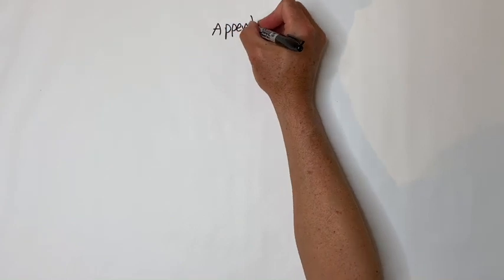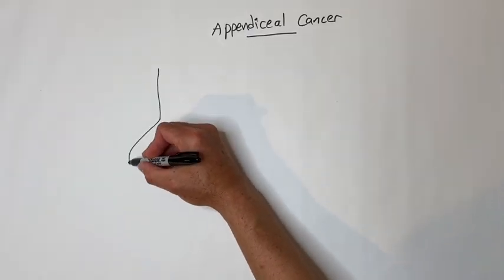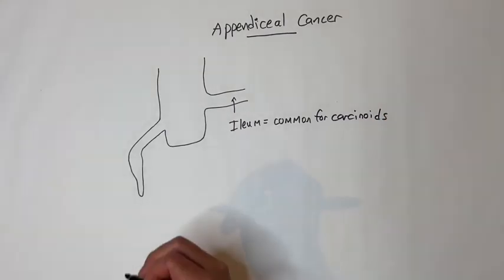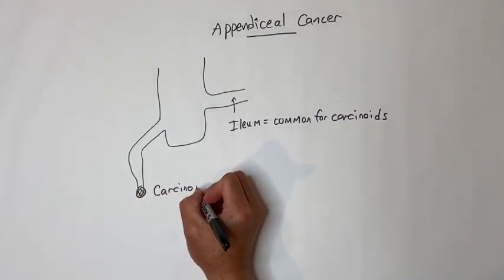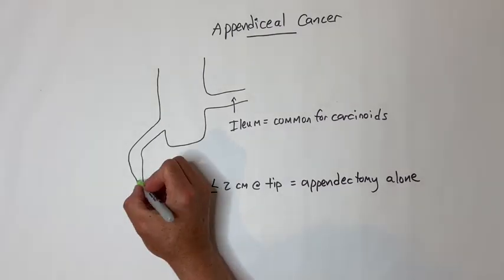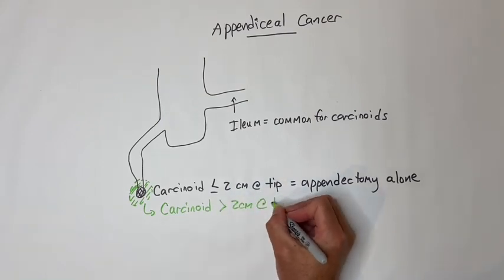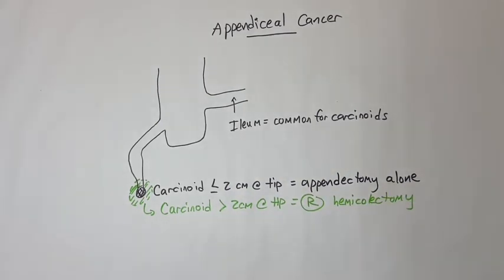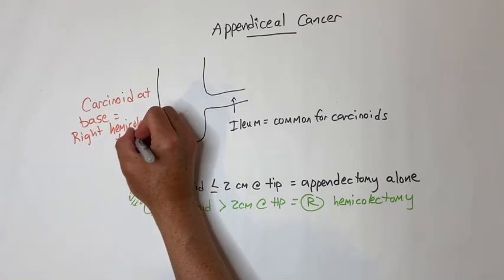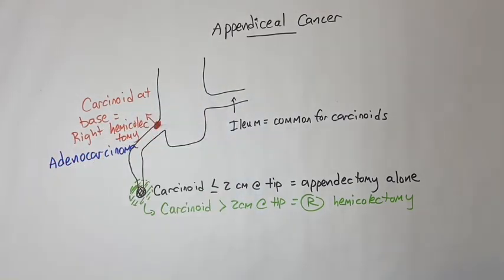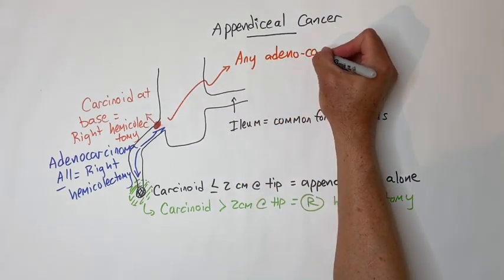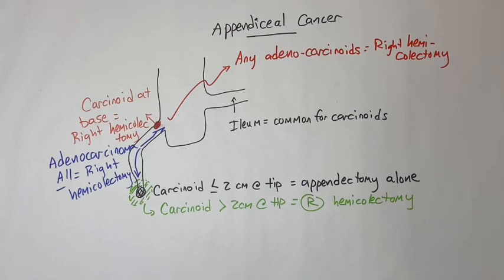Appendiceal cancer is a common question. The appendix is one location for neuroendocrine or carcinoid tumors — the most common location is the ileum, but the appendix is second most common. If an appendiceal carcinoid tumor is less than two centimeters and at the tip, appendectomy alone is sufficient. Carcinoid over two centimeters at the tip needs a right hemicolectomy. Carcinoid of any size at the base of the appendix also needs a right hemicolectomy. Any adenocarcinoma of the appendix, no matter what size, gets a right hemicolectomy. Adenocarcinoma of the terminal ileum also gets a right hemicolectomy.